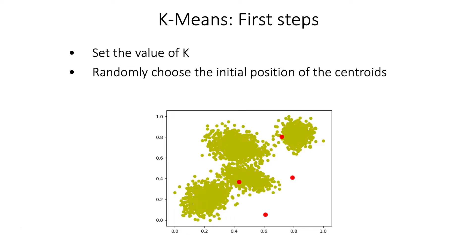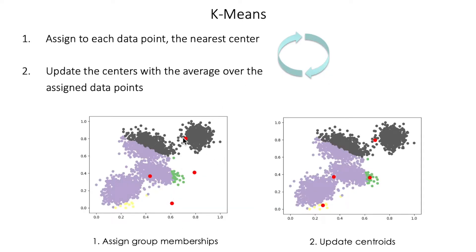Let's see an example. We want to run k-means clustering on this database of yellow points. Initially we randomly generate the initial centers — here we assume k equals 4, so we generate four random centers. The first step is, given those centers, to assign the group memberships: every data point finds its closest centroid, assuming we are using Euclidean distance. We can see that the leftmost centroid already attracts most of the points colored in purple.